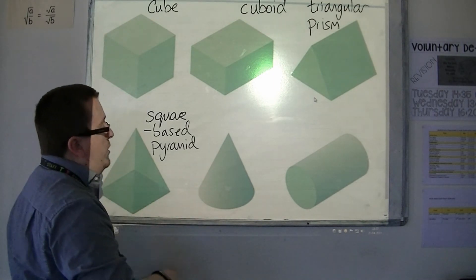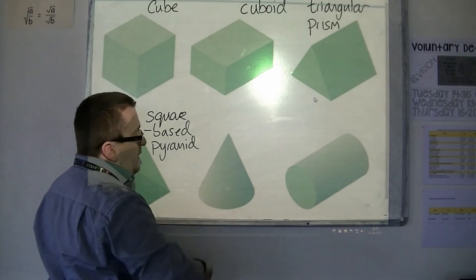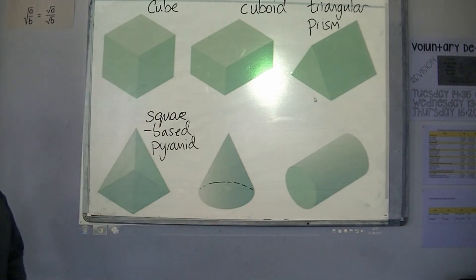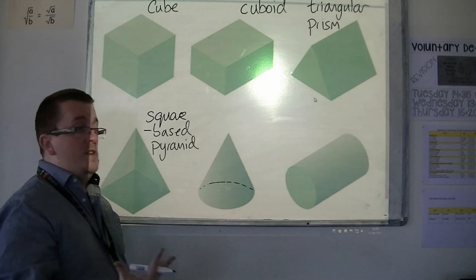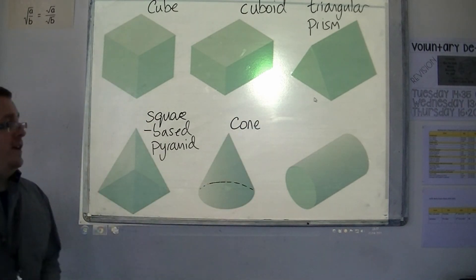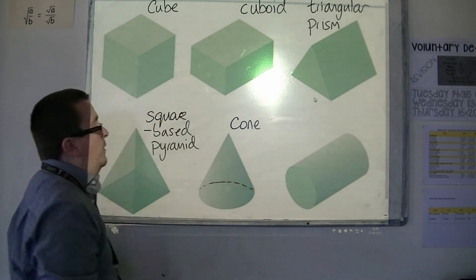This shape, what you're seeing, is it's got a circular base, and this is referred to as a cone. Like an ice cream cone, that is the shape that we would be used to.